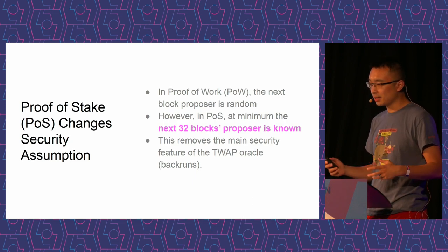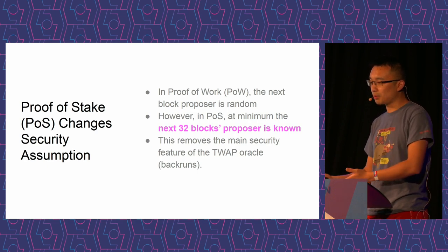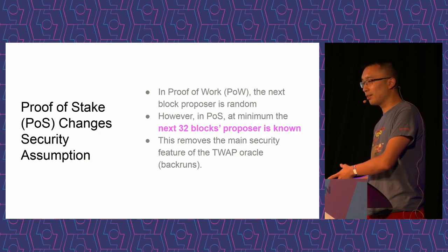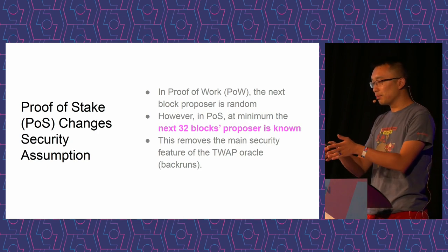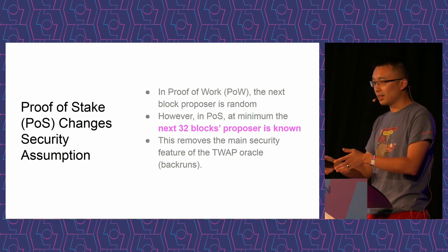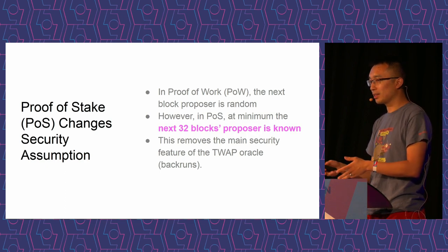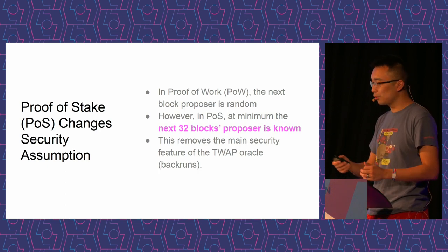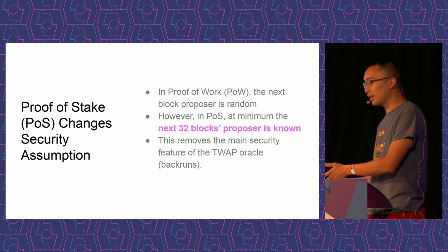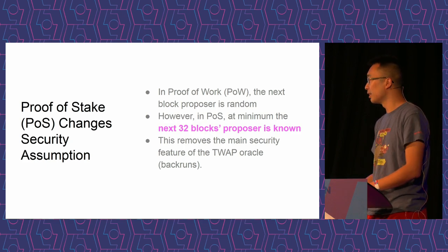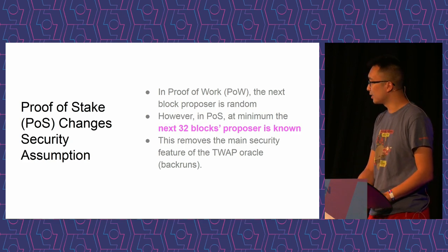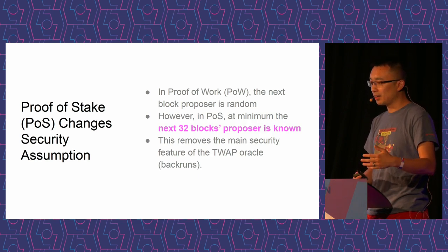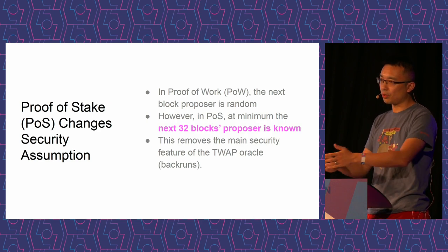The important difference is in proof-of-work, you don't know who the next block proposer is, so if you manipulate the Oracle in this block, then in the next one you have this highly distorted pool, and everyone is going to bid up the ability to trade against it, so all your potential profit is just going to be wasted in an on-chain gas auction to get into the block. But in proof-of-stake, you know the next 32 blocks' proposer ahead of time, and importantly, some large stakers might control several blocks in a row. That really requires us to assume these validators are not going to manipulate a pool and then censor every transaction that tries to correct the price.